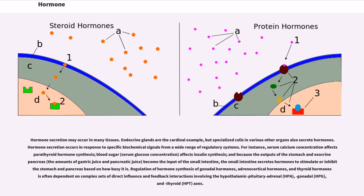Regulation of hormone synthesis of gonadal hormones, adrenal cortical hormones, and thyroid hormones is often dependent on complex sets of direct influence and feedback interactions involving the hypothalamic pituitary adrenal, HPA, gonadal, HPG, and thyroid, HPT, axes.